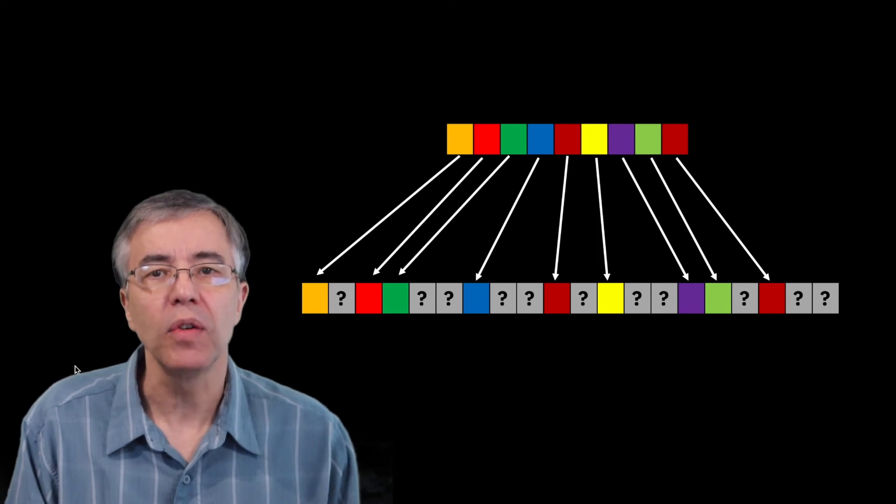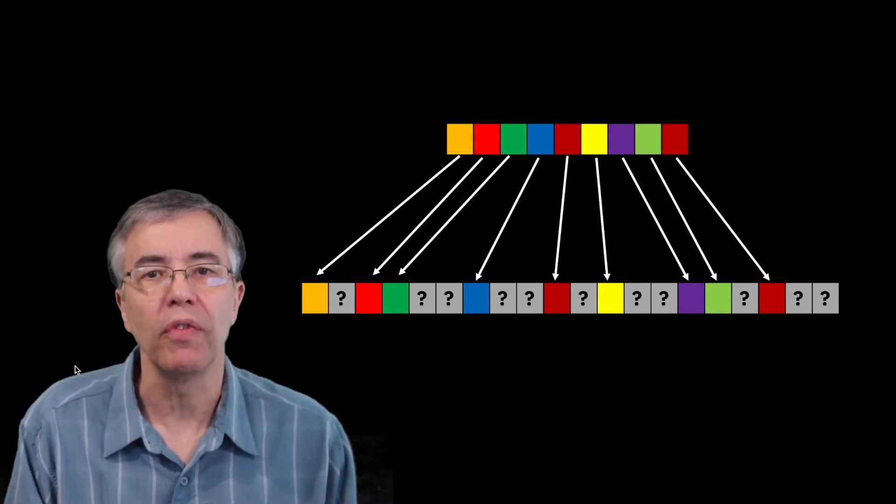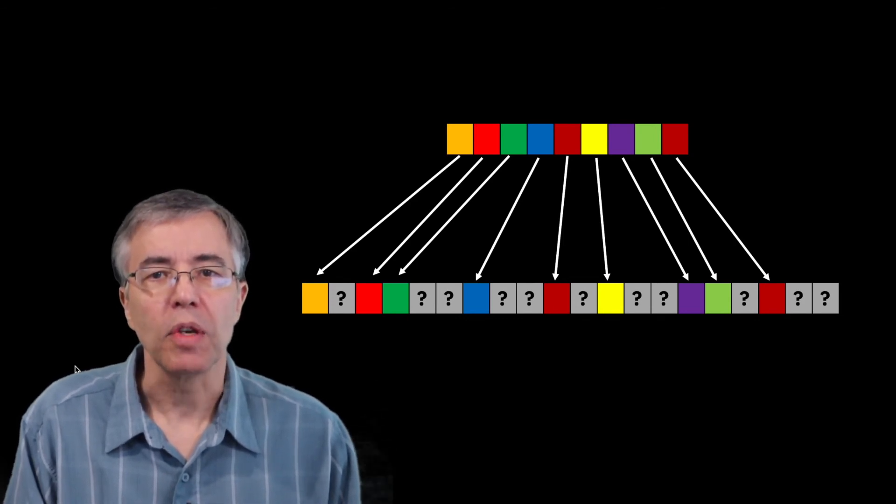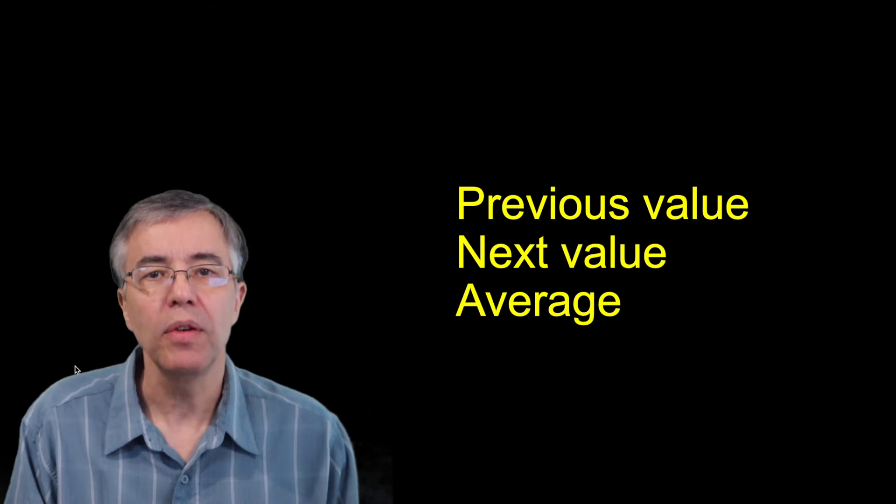Let's start by assuming that there is only one missing value between the known values. This could be the case where we double the sampling interval. We could use a previous value, the next value, or average the two. The choice could represent best case, worst case, or average case scenario.